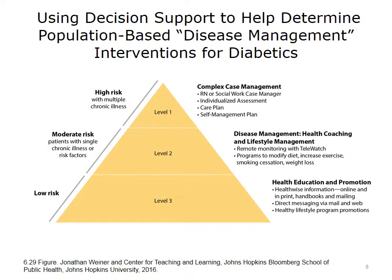Now we return to the pyramid — in this case, a three-level pyramid. It reminds us that using reports and scores, we can think about what a nurse case manager or whole team might do at the different levels of the pyramid. At the bottom level, there's outreach and education — for example, a smoking cessation program or weight loss program.